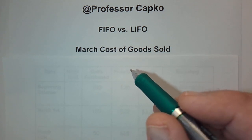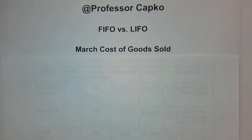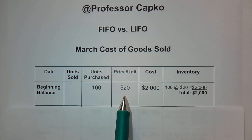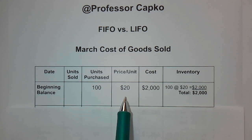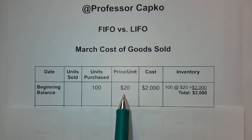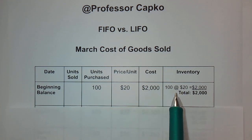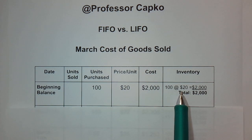Let's get going. We're going to look at March cost of goods sold. Looking at a chart, we had a beginning balance of 100 units that cost $20 per unit. These are units purchased by this fictitious company and held in inventory to sell to customers. At the beginning of March we had 100 units at $20 per unit for a total of $2,000 in beginning inventory.